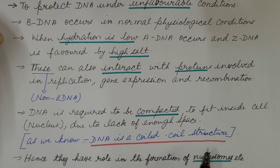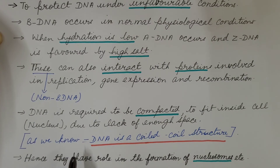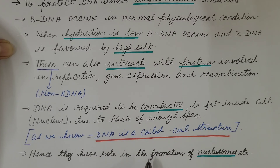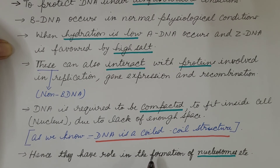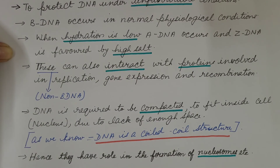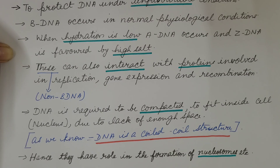DNA also needs to be compacted to fit inside the cell nucleus due to lack of space, so different types of structures are formed. DNA is a coil-coil structure, which will be discussed in detail in a separate video. These different DNA forms have an important role in the formation of nucleosomes, so that DNA becomes compact and can fit easily in the nucleus. In living cells, most DNA is in a mixture of A and B forms, and some regions are capable of forming Z-DNA, but it is a transient structure that later disappears.